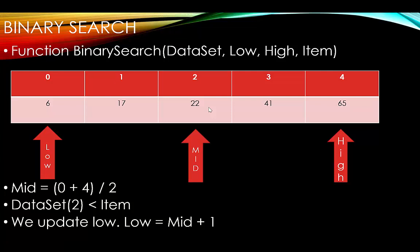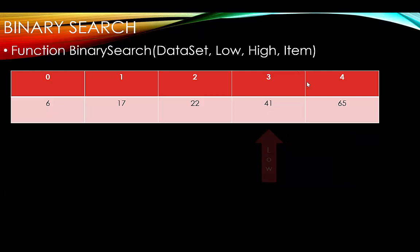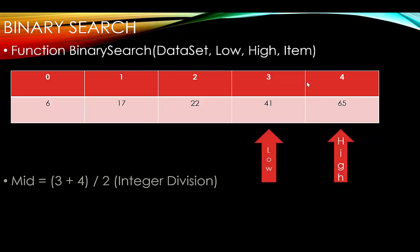We swing low over to mid plus one — mid was 2, so 2 plus 1 is 3. Now low is 3 and high remains 4. We pass those to the recursive call. Now we recalculate mid: 3 plus 4 is 7, divided by 2 using integer division gives 3.5, and dropping the decimal leaves mid equal to 3.